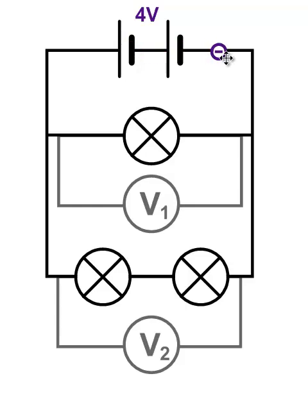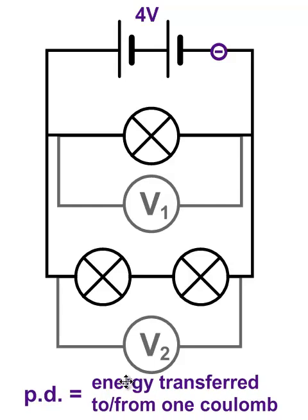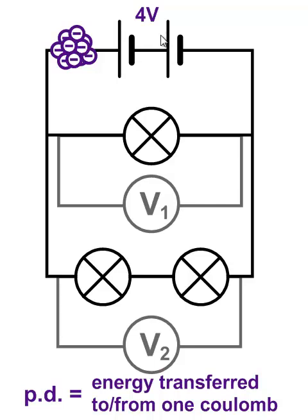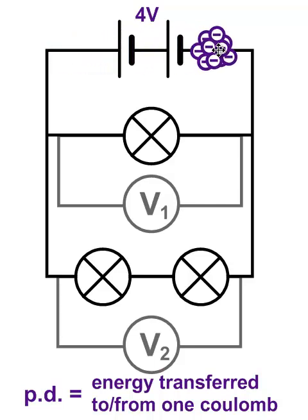We can use ideas about energy to work out what's going on with the potential difference. The potential difference tells you how much energy is transferred to or from one coulomb of charge at that point in the circuit. One coulomb of charge isn't the same as one electron — electrons have a tiny charge and you'd need a vast number of electrons to make up one coulomb. So let's pretend this is a coulomb of charge. These cells have a potential difference of four volts in total, so as a coulomb of charge passes through the cells it gains four joules of energy. So they gain four joules of energy.